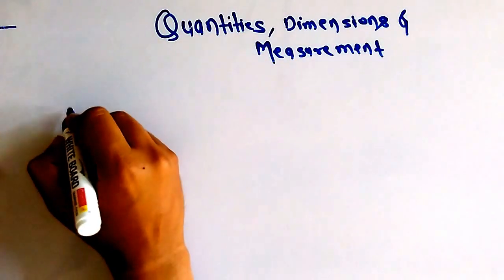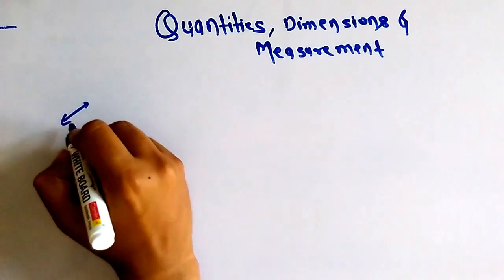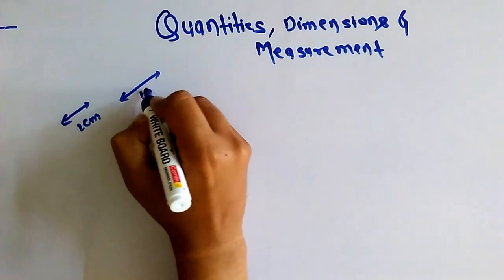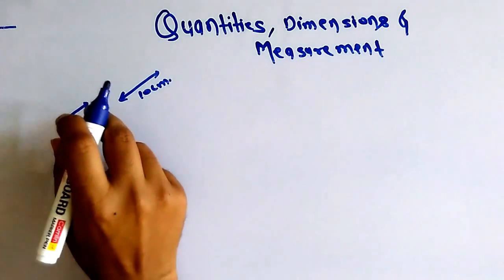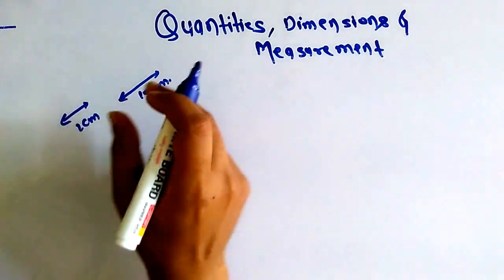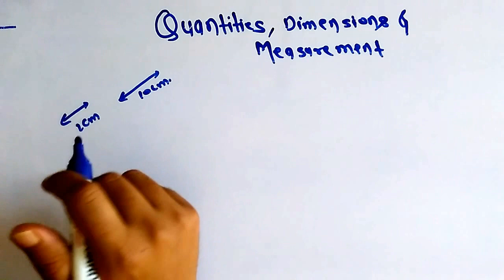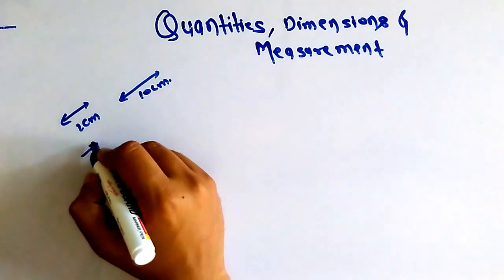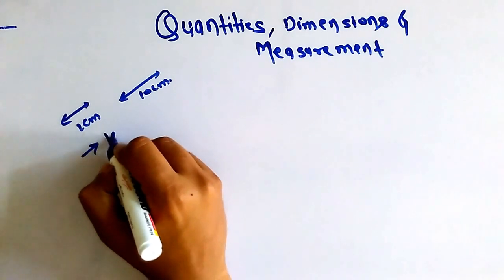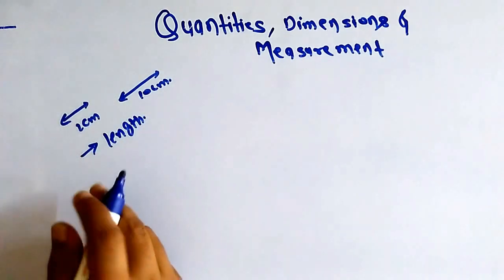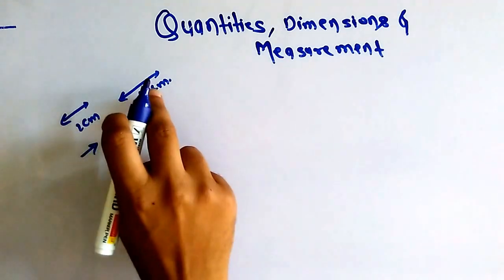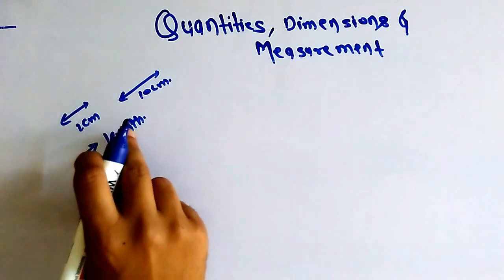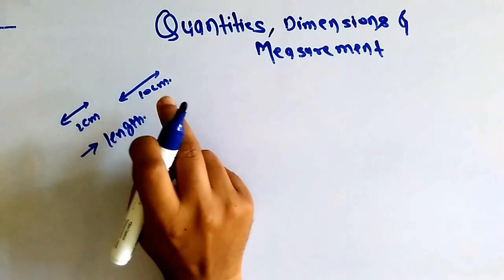Suppose if I am talking about chalk — one chalk having a length of 2 cm and another chalk having a length of 10 cm. So we are saying this chalk is smaller in size and this one is bigger in size. In scientific terms, we are talking about length — the length of this chalk is 2 cm and the length of another is 10 cm.